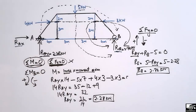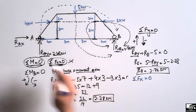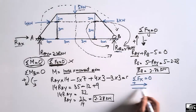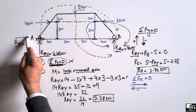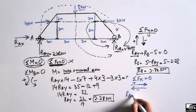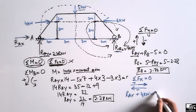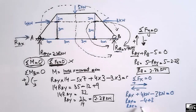Now we have only one unknown remaining, R_AX. We use the summation of horizontal forces equal to zero. Taking rightward forces as positive and leftward forces as negative: R_AX plus 4 kN minus 3 kN equals zero. So R_AX equals minus 4 plus 3, which gives R_AX equals minus 1 kN.